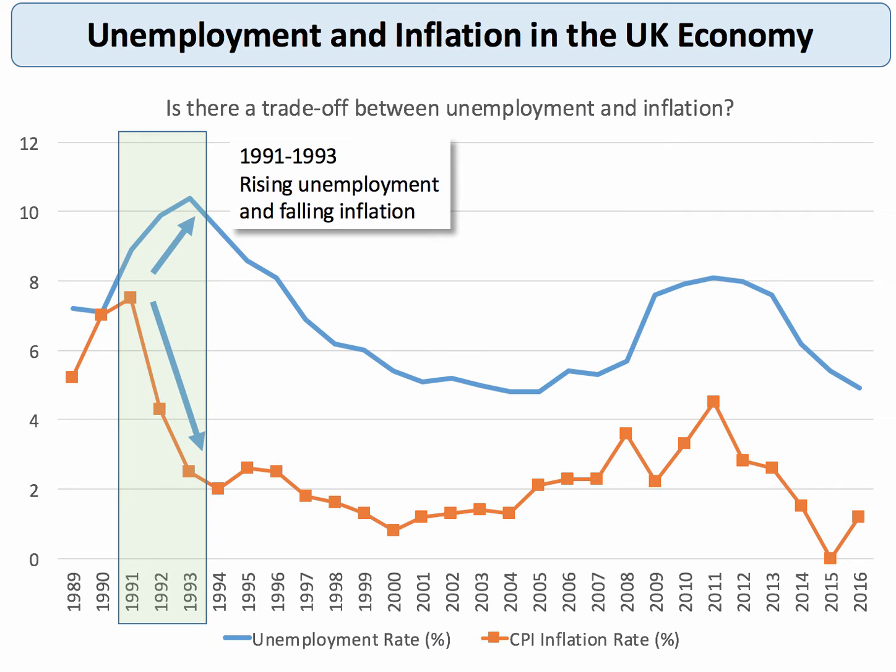This chart shows the annual change in consumer prices — the rate of inflation shown in orange — and the rate of unemployment, which is always expressed as a percentage of the labour force.